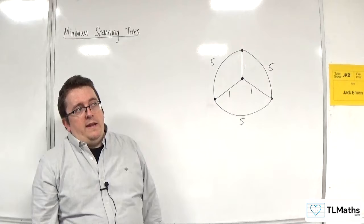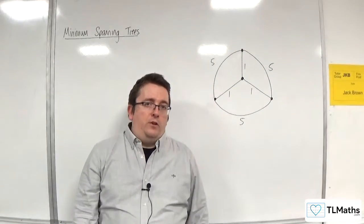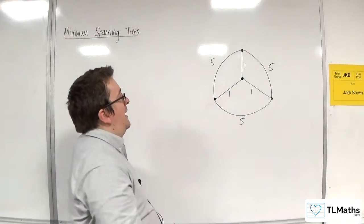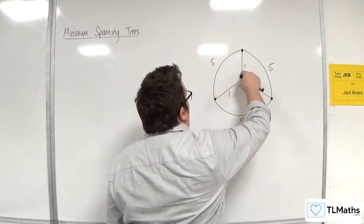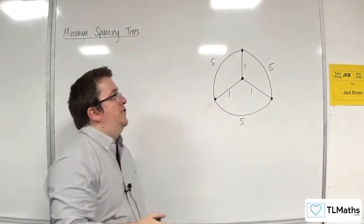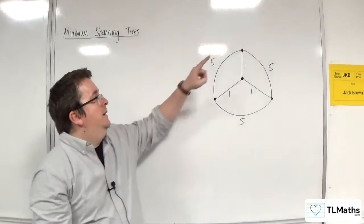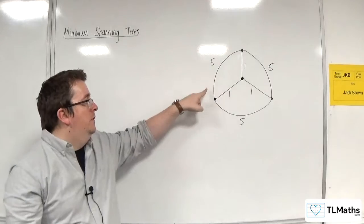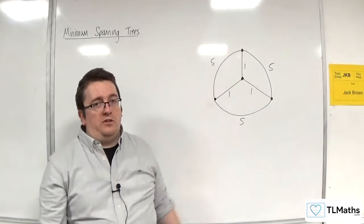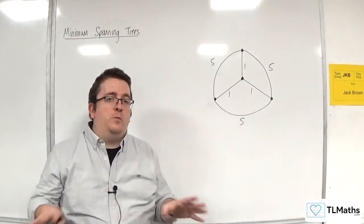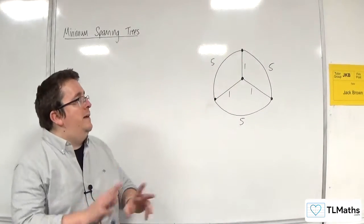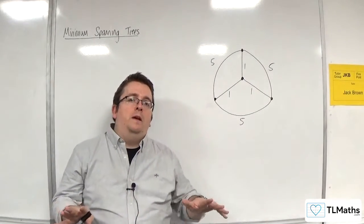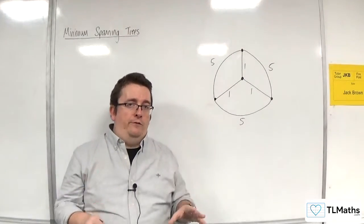In a tree, you cannot have a cycle. This network has a cycle because you can go around like that. Essentially, it is a path that you can take from where you start and then round and get back to where you started. We can't have that, so we want no cycles. And as we work through the algorithms in this section, that's what we need to look out for.